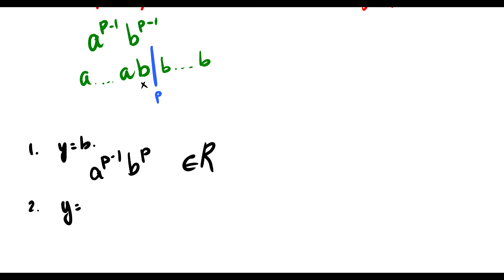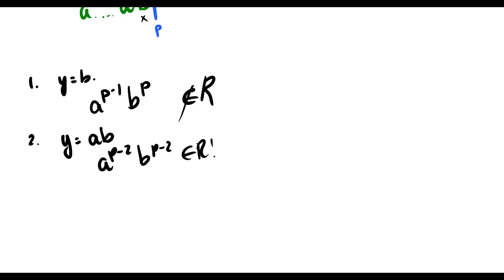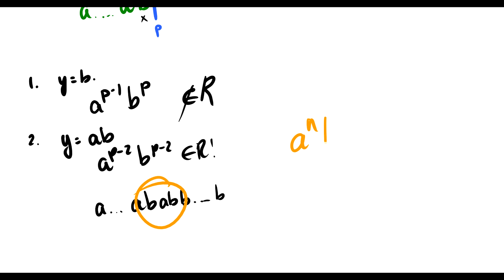The second case: what if y equals ab? Well, if we pump it down and remove ab, we get a^(p-2) b^(p-2) — that's in R. However, if we pump it up, we end up with a string like a...a b a b...b — essentially a^n b a b^n. That's not our original language a^n b^n, so it's not going to be in R. So no matter which case we choose, if we pump up or pump down, there are cases where the string is no longer in our language.